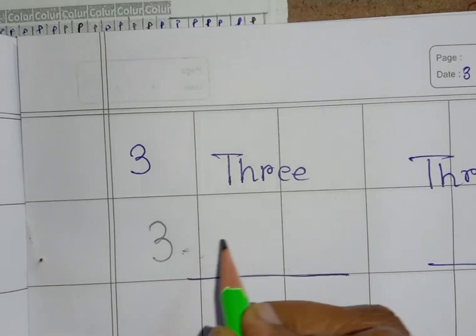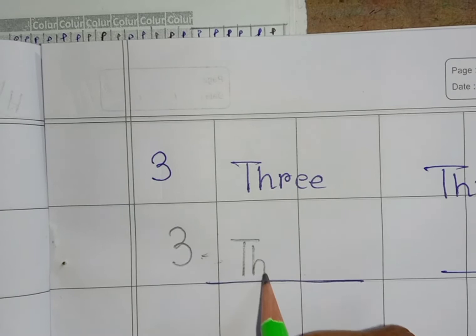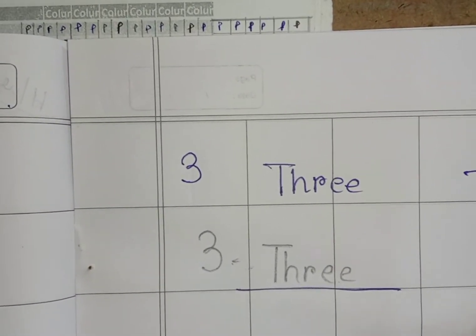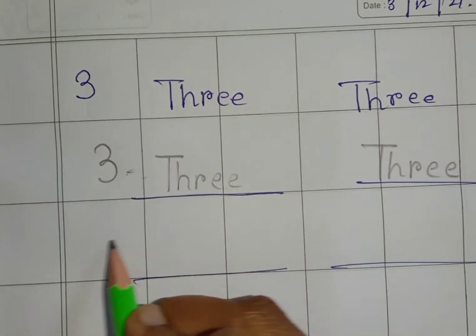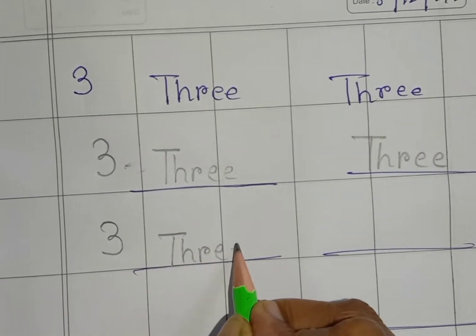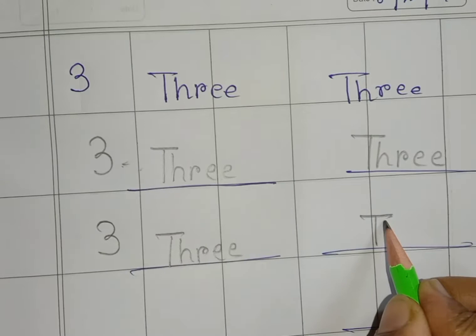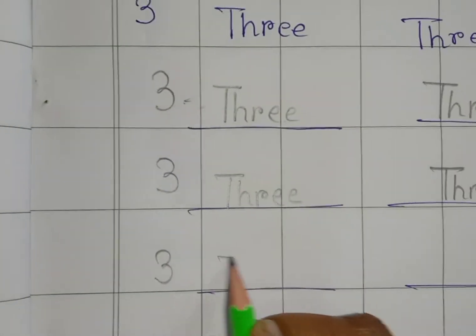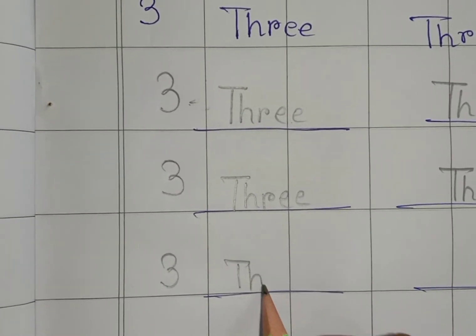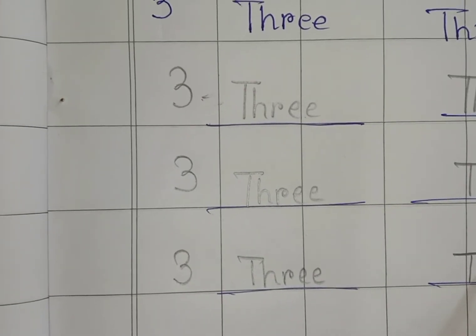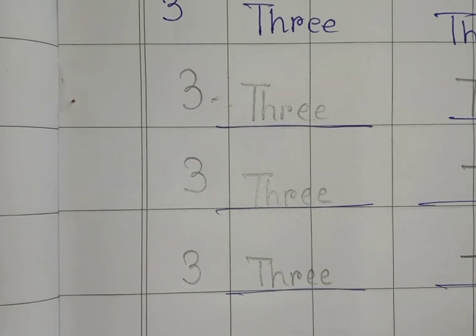This is number 3. The spelling of 3 is T-H-R-W-E-3. Children you say and write. Okay? Number 3. T-H-R-W-E-3.